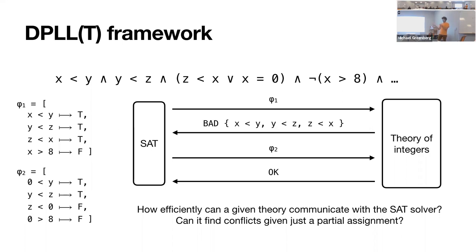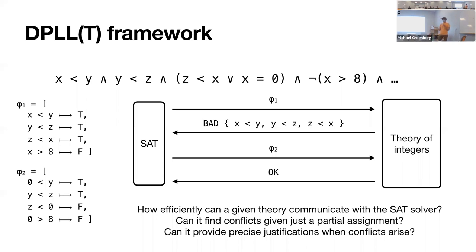You can always just throw up your hands and say this assignment doesn't work, but then the SAT solver hasn't gained much information to cut out future search space. So the ability of an SMT theory to provide precise justifications plays a big impact on its efficiency.